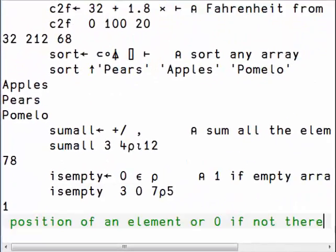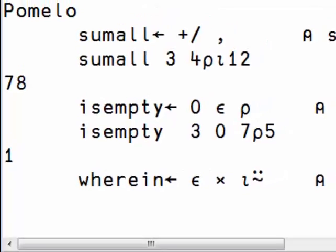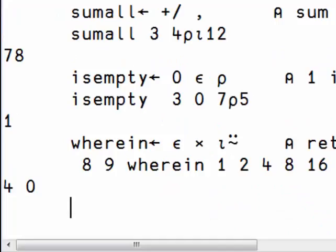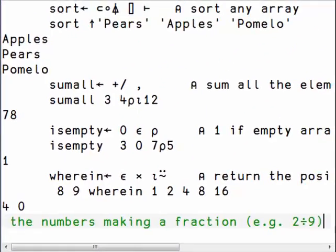We want to know the position of an element, or 0 if it's not there. So we check if it's a member, and we multiply by its position. So here we check what is the position of 8 and 9 in the set 1, 2, 4, 8 and 16. 8 is in the fourth position, and 9 is not there, so we return 0.